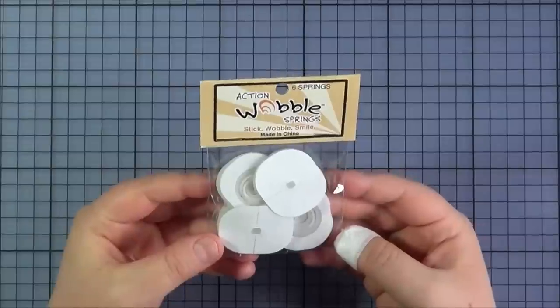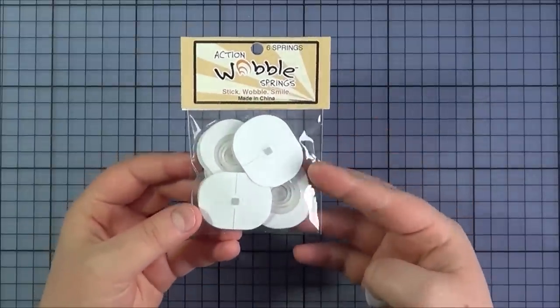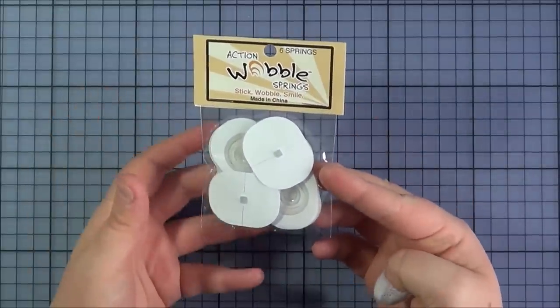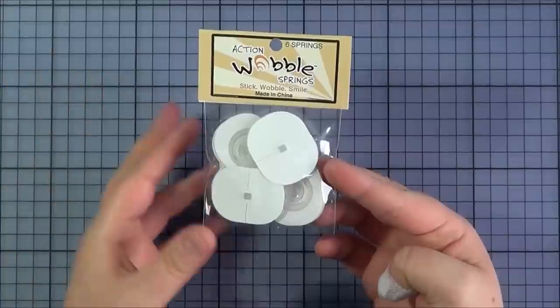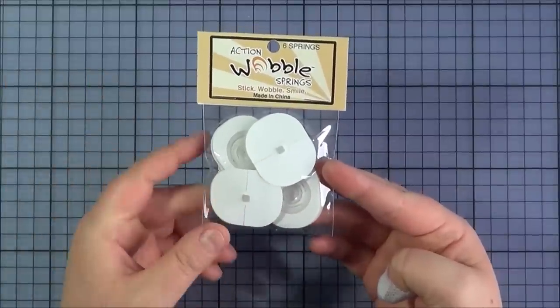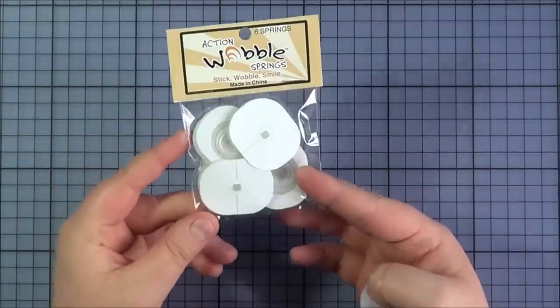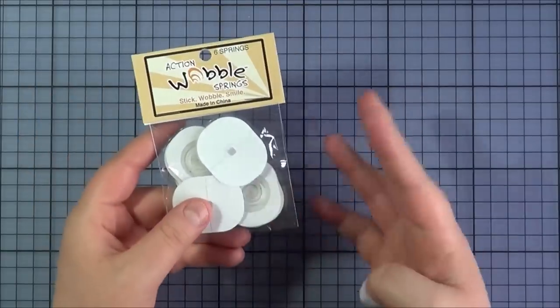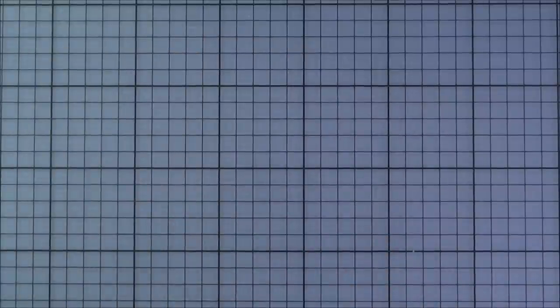I then got some Action Wobblers. These were out of stock for quite a long time. I'm sure they've been back in stock for a while but I finally got some. I thought they'd be quite handy to have on hand if I did want to make a card with a wobbling feature. I've got a six pack of those.